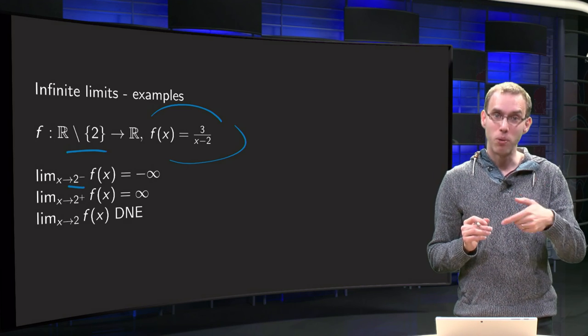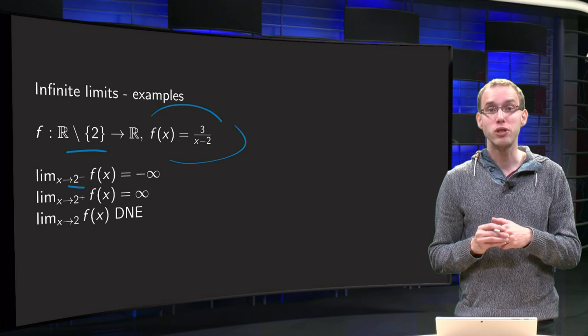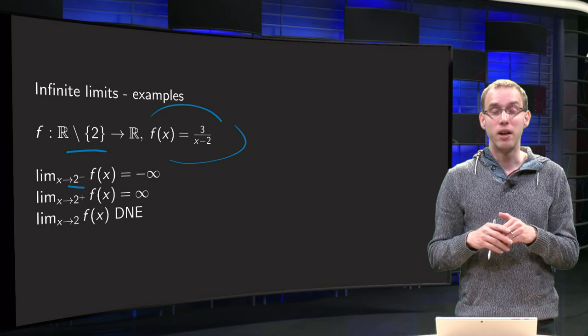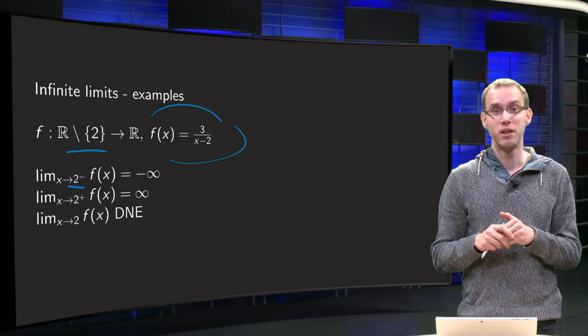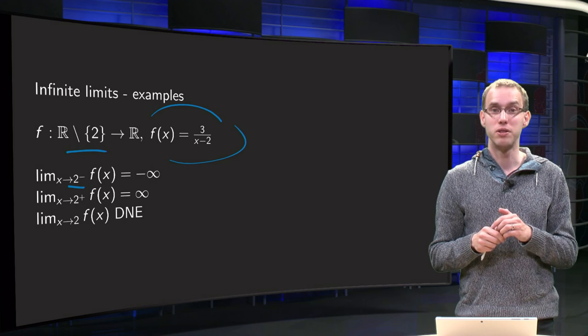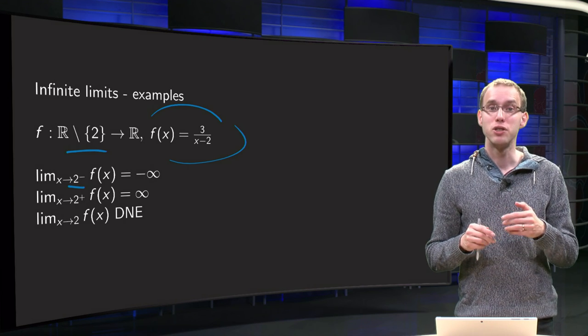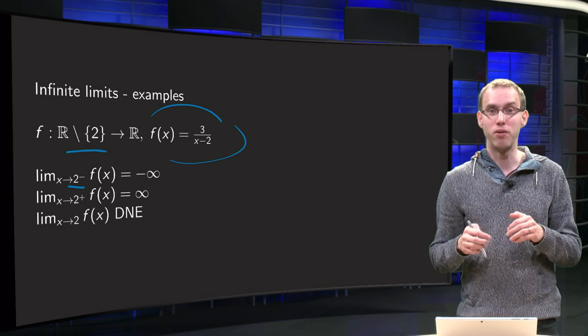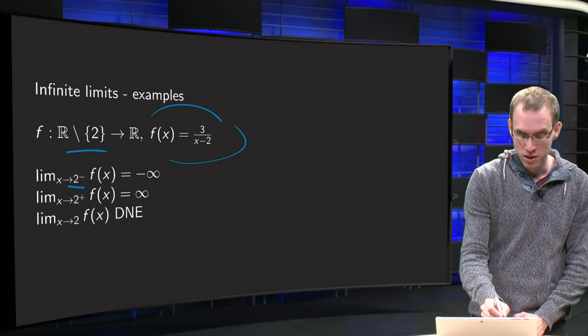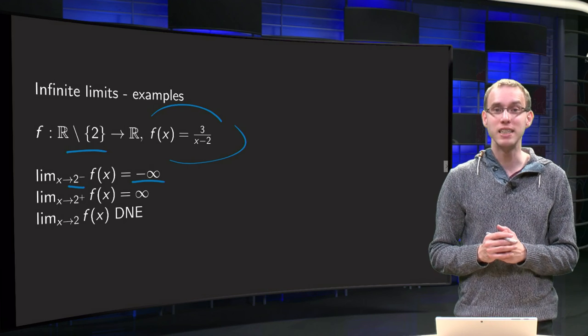If you plug in more x's closer and closer to 2, but slightly below 2, your denominator will become closer and closer to 0, but still be negative. So you get something like minus something over something which is very small. So this will tend to minus infinity, so this limit will be minus infinity.